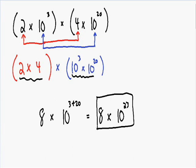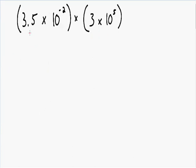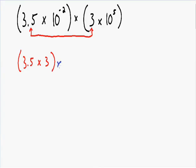So now let's go over another example that's a little bit harder. Here we have 3.5 times 10 to the negative 2 multiplied by 3 times 10 to the fifth. Our first step is the same — we need to multiply the constants. So we have a constant of 3.5 and we need to multiply that by our other constant of 3, giving us 3.5 multiplied by 3. Now we need to multiply our base tens: 10 with an exponent of negative 2 multiplied by 10 with an exponent of 5.